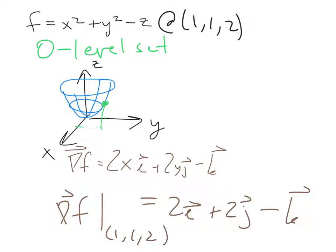So this vector — I'm going to go over 2, out 2, down 1 — is perpendicular to the surface at the point I identified. Another vector that's perpendicular to the surface is obtained by multiplying the gradient by negative 1. So those are two different normal vectors to the surface at this point.